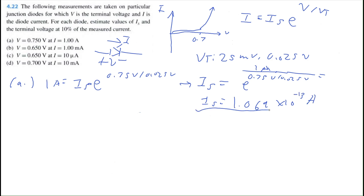That's a very small current, and this is actually what we would expect — the source current will typically be very, very small. Now to estimate the terminal voltage at 10% of the measured current: if we decrease the current, we would expect the voltage to be less. So we take I divided by 10, since that gives 10% of the current.